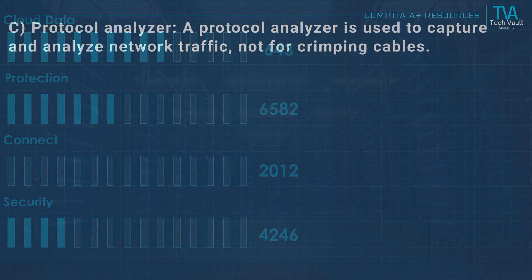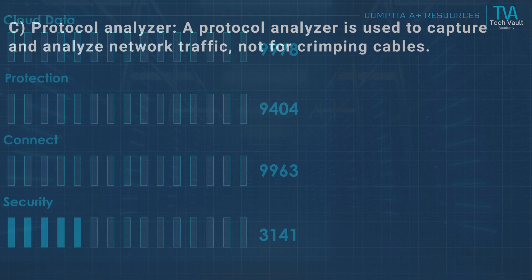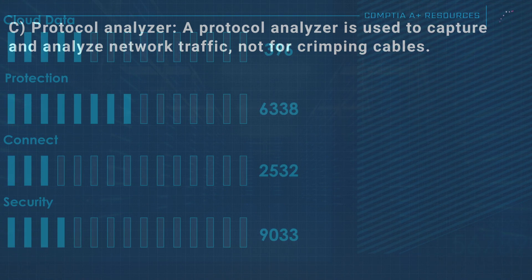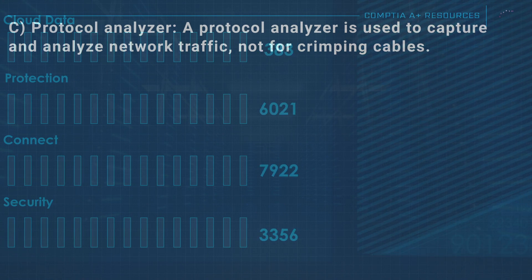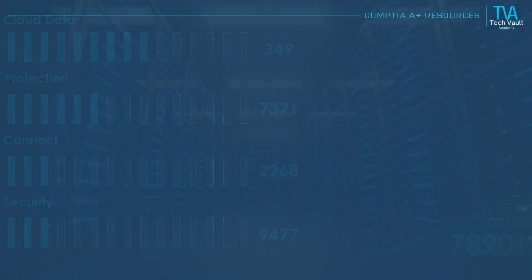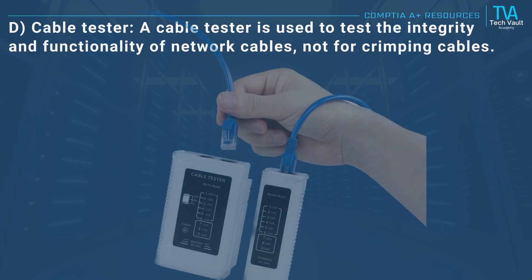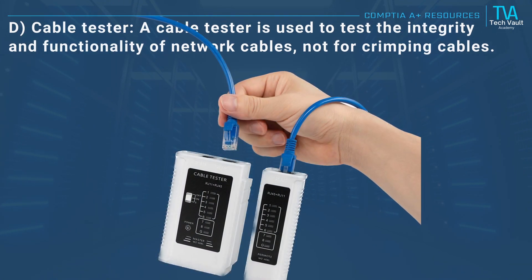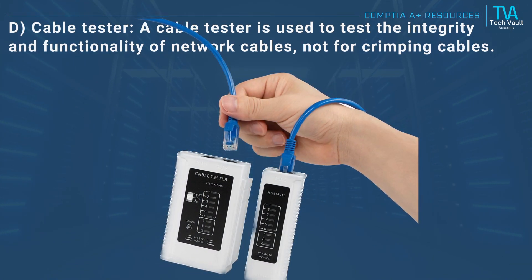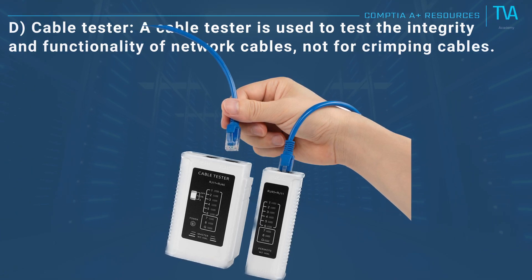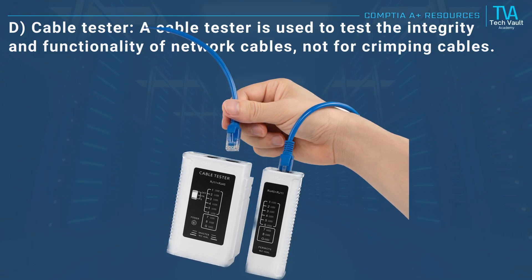C, protocol analyzer: a protocol analyzer is used to capture and analyze network traffic, not for crimping cables. D, cable tester: a cable tester is used to test the integrity and functionality of network cables, not for crimping cables.